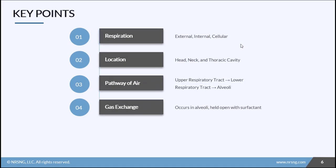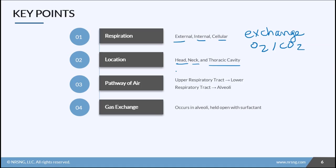Let's recap. Make sure you know the terminology: external versus internal versus cellular respiration. They all involve exchange of CO2 and oxygen in some form, just in different locations. Inspiration is the process of breathing in and expiration is the process of breathing out. We find the respiratory system in the head, neck, and thoracic cavity. Air flows from the upper respiratory tract — the oral and nasal passages plus the pharynx — down to the lower respiratory tract: the trachea, bronchi, bronchioles, and then to the alveoli, where gas exchange occurs. That gas exchange in the lungs is our external respiration.